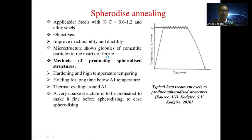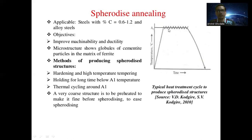Methods of producing a spheroidized structure include hardening and high temperature tempering, holding for a long time below the A1 temperature, and thermal cycling around the A1 temperature. A very coarse structure must be preheated to make it fine before spheroidizing. This diagram shows the typical heat treatment cycle to produce the spheroidized structure, where the steel is heated at the A1 temperature and some mechanical treatment is provided.